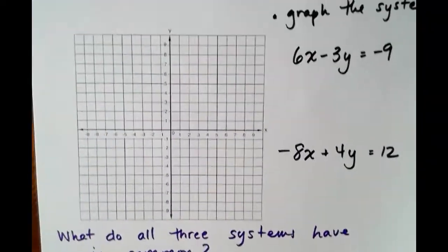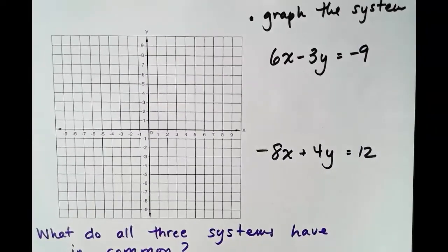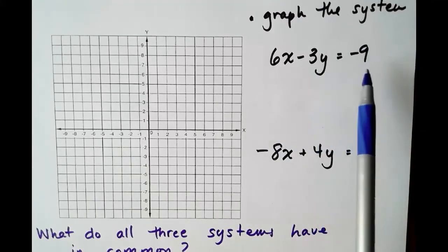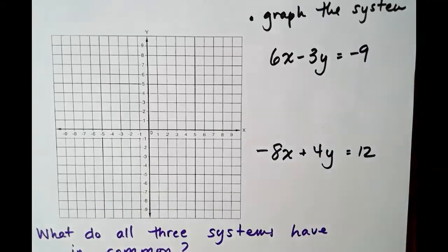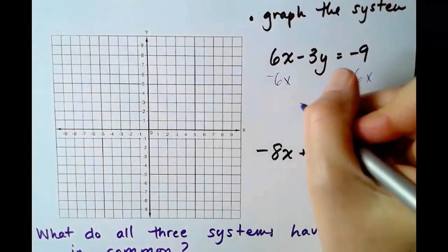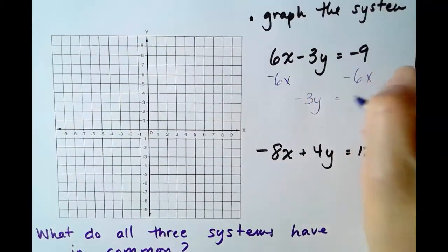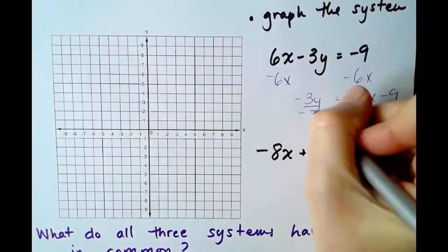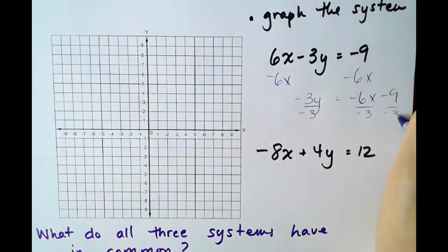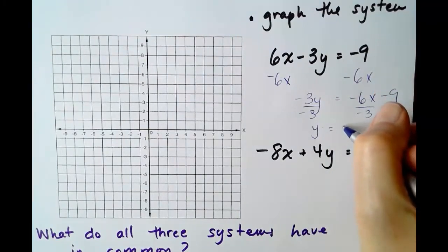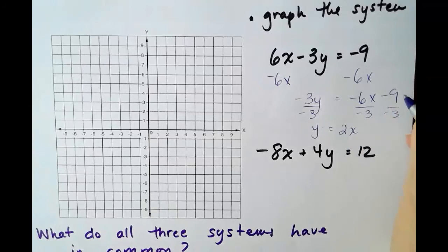One last problem. We've got graph the system 6x minus 3y equals negative 9. So let's solve it for y, minus 6x, minus 6x. Negative 3y equals negative 6x minus 9. We're going to divide by negative 3. Negative 6 over negative 3 reduces to positive 2x. Negative 9 over negative 3 is plus 3.